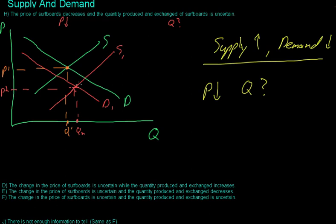And then the quantity, the change in quantity is uncertain because if demand decreased by a little and supply increased by a lot, we might have like the situation drawn here where the quantity, the new quantity, is greater than the old quantity.